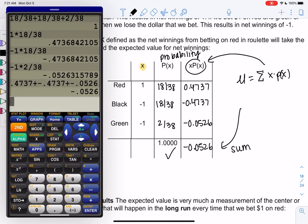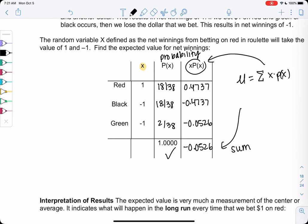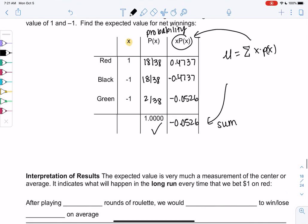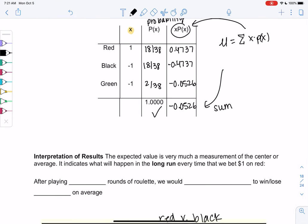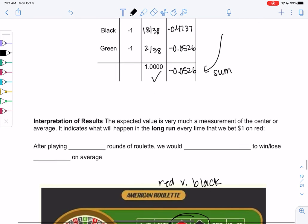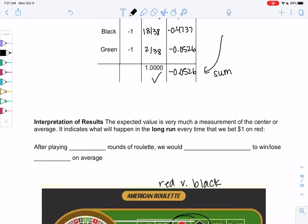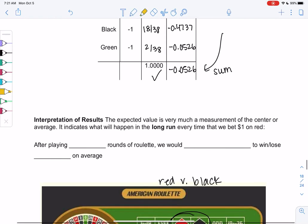And so this is where the issue happens for you, and it's good for the casino, that net winnings is negative, meaning you're going to lose if you keep playing. Anything, the whole point of probability is anything can happen one time, right? But if you keep playing, you're going to lose. So let's look at the interpretation. So this is the expected value, is very much a measurement of the center or average. But the main idea is it's indicating what will happen in the long run. So you can go and bet on red and win and get really excited, but you're just going to keep playing until the casino's winning.